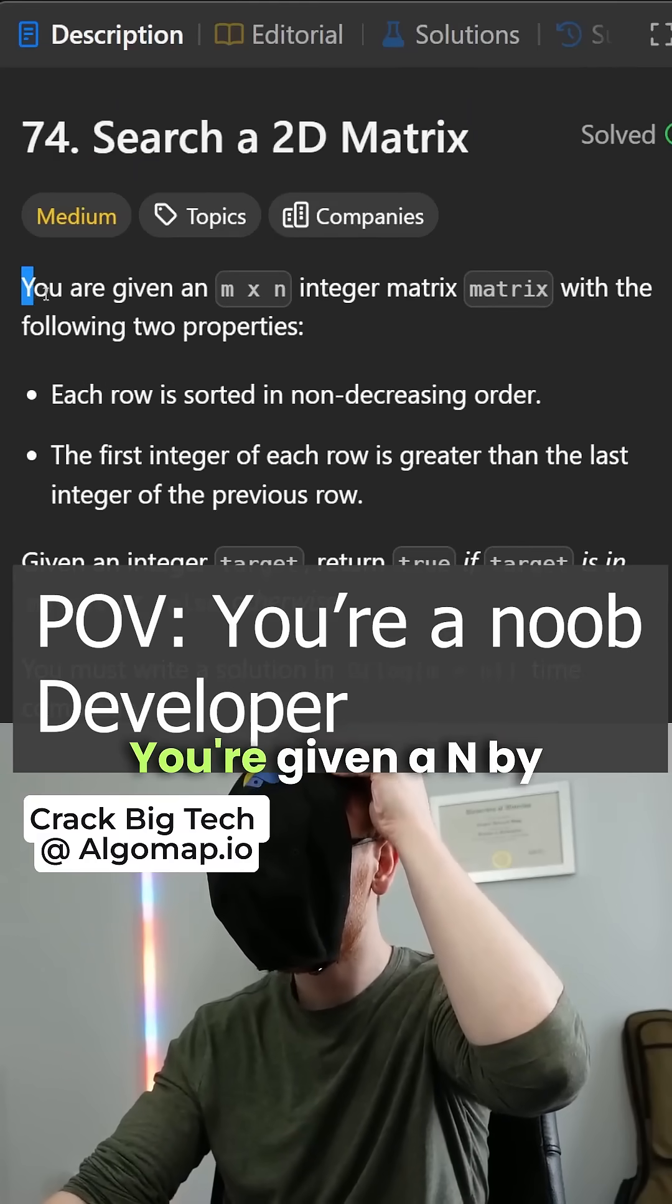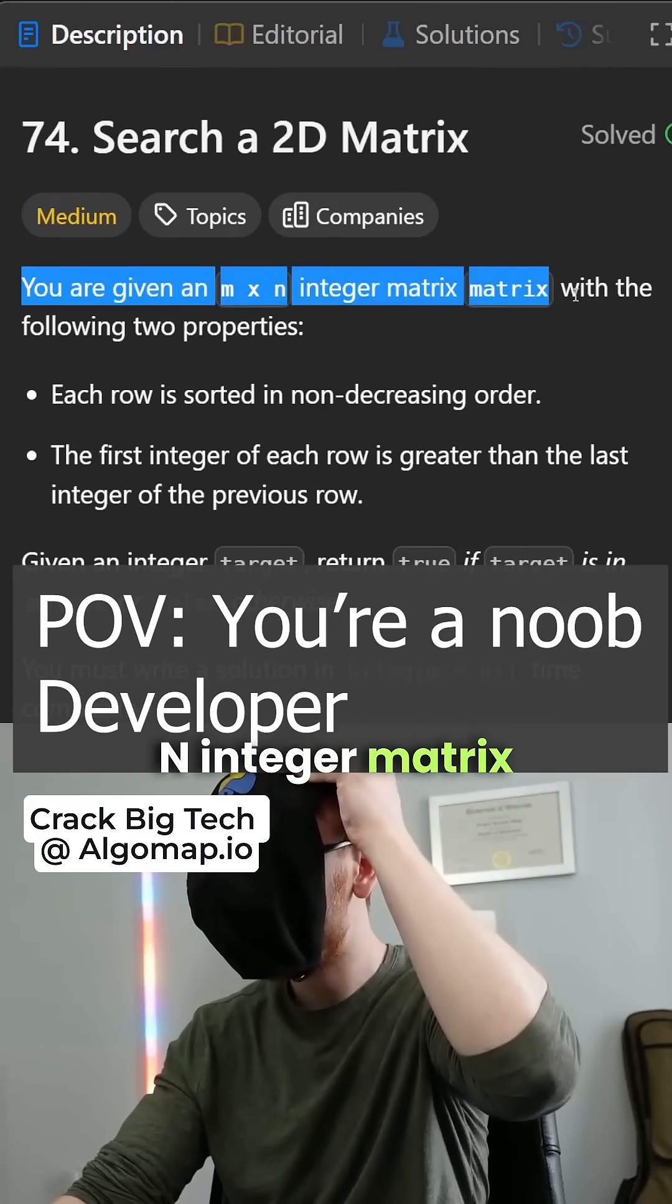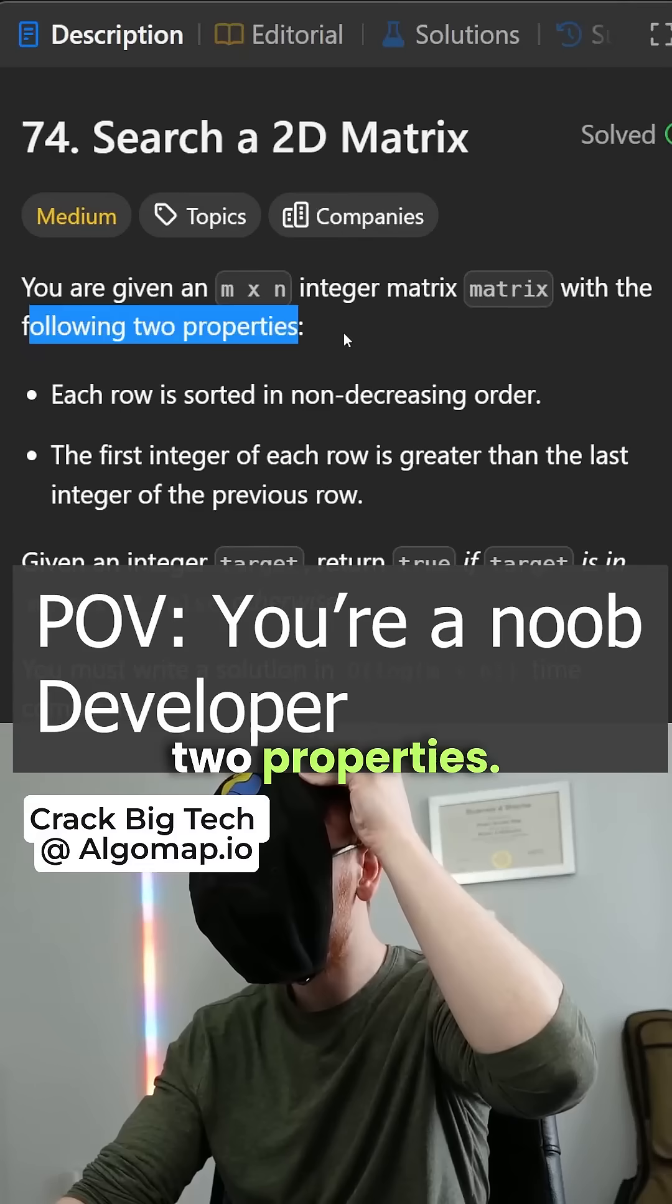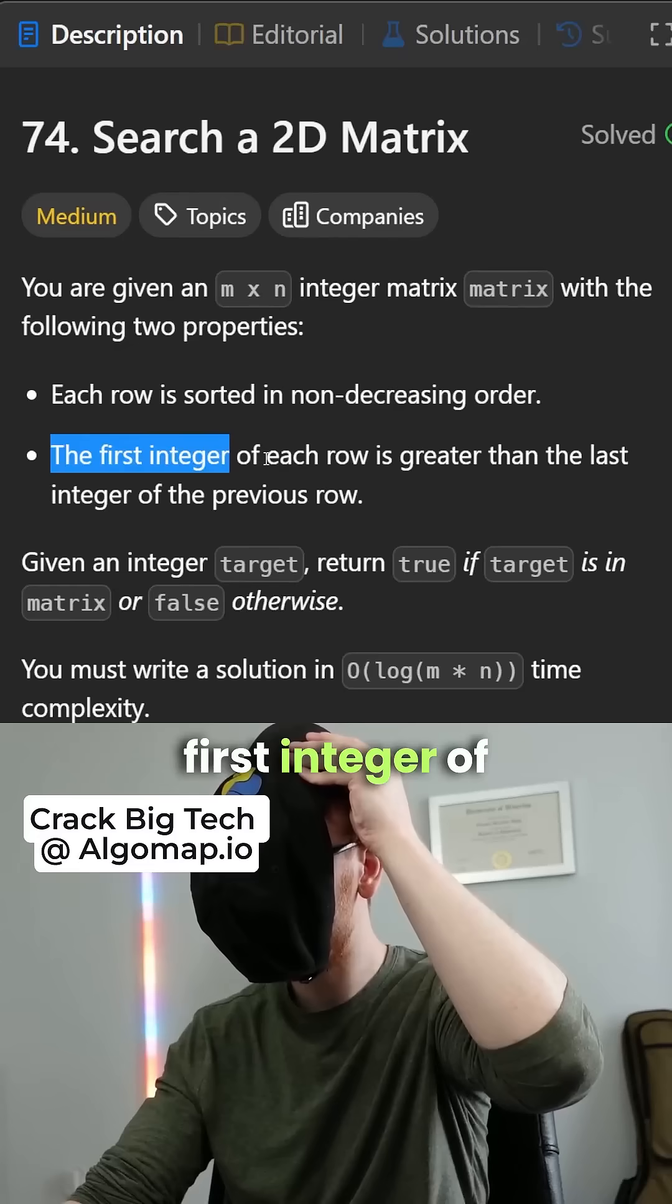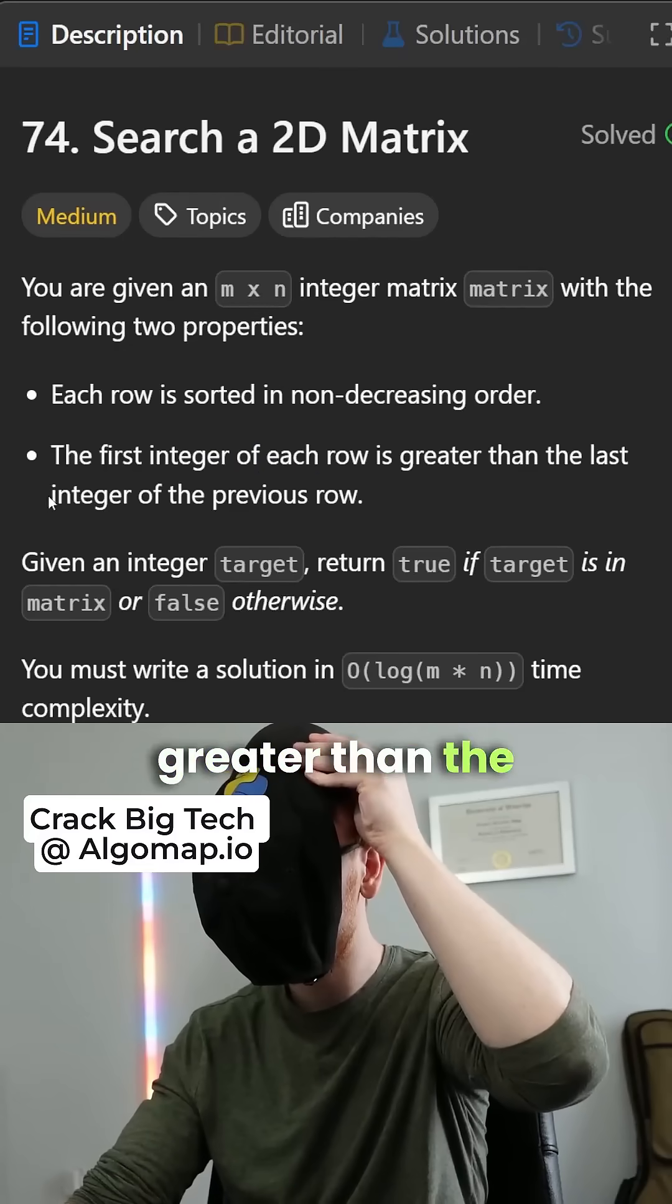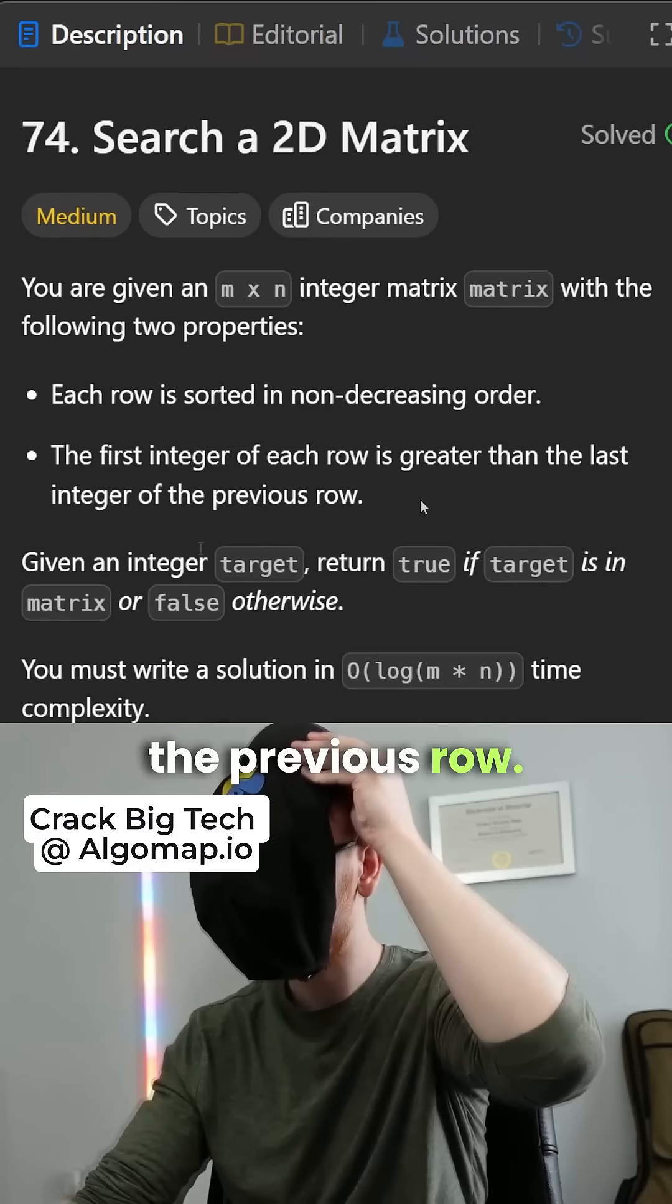Search a 2D matrix. You're given an m by n integer matrix with the following two properties: each row is sorted in non-decreasing order, and the first integer of each row is greater than the last integer of the previous row.